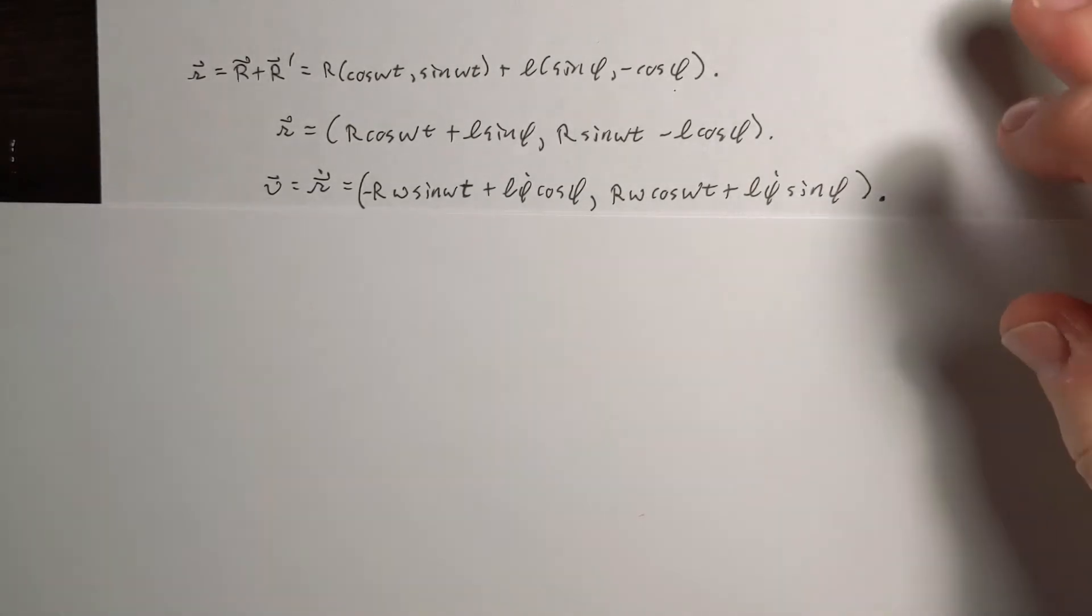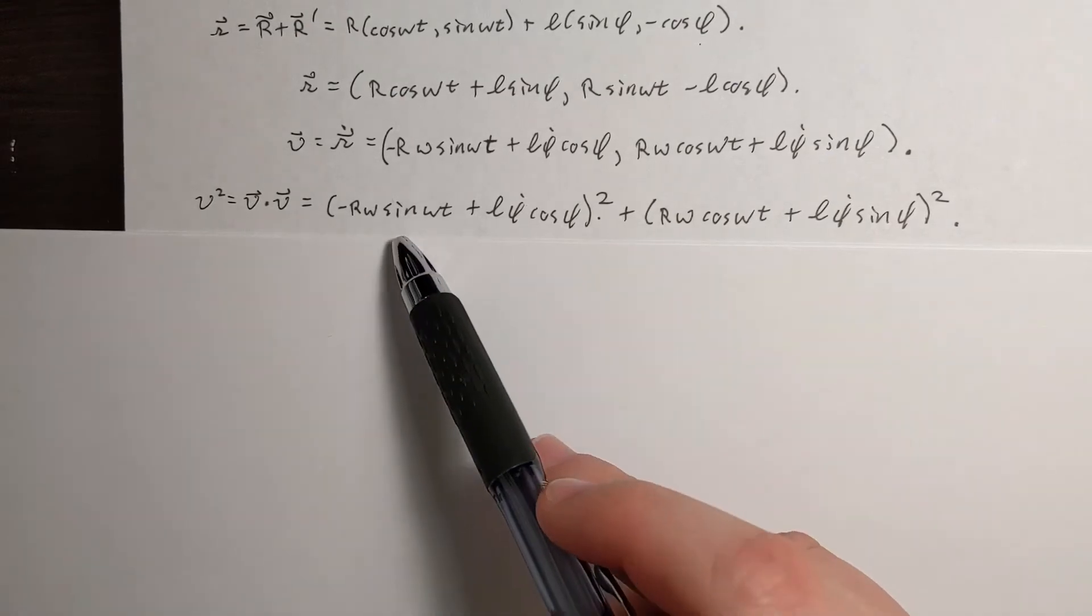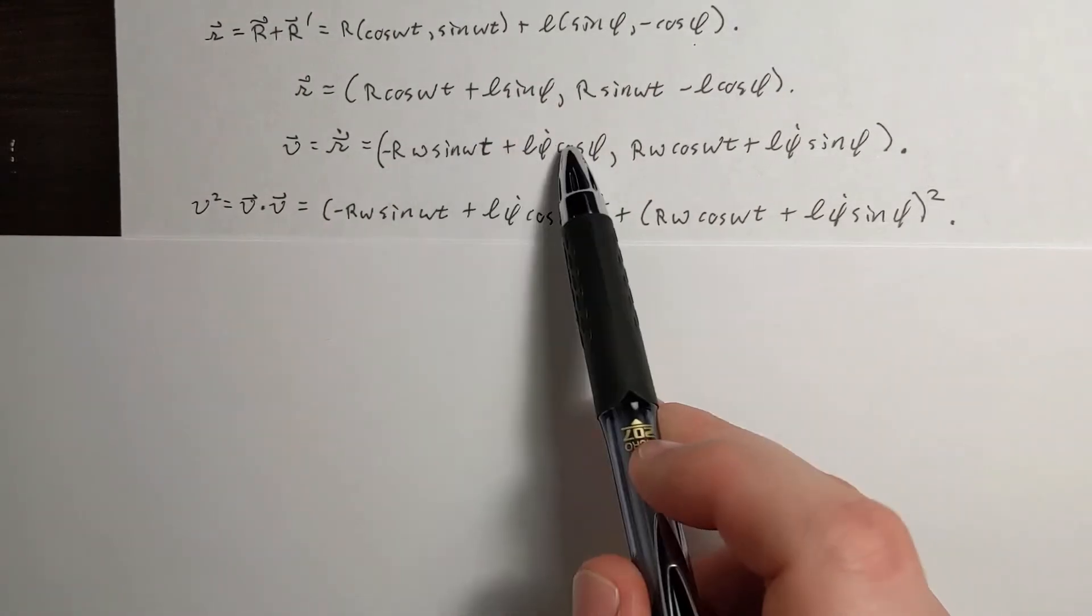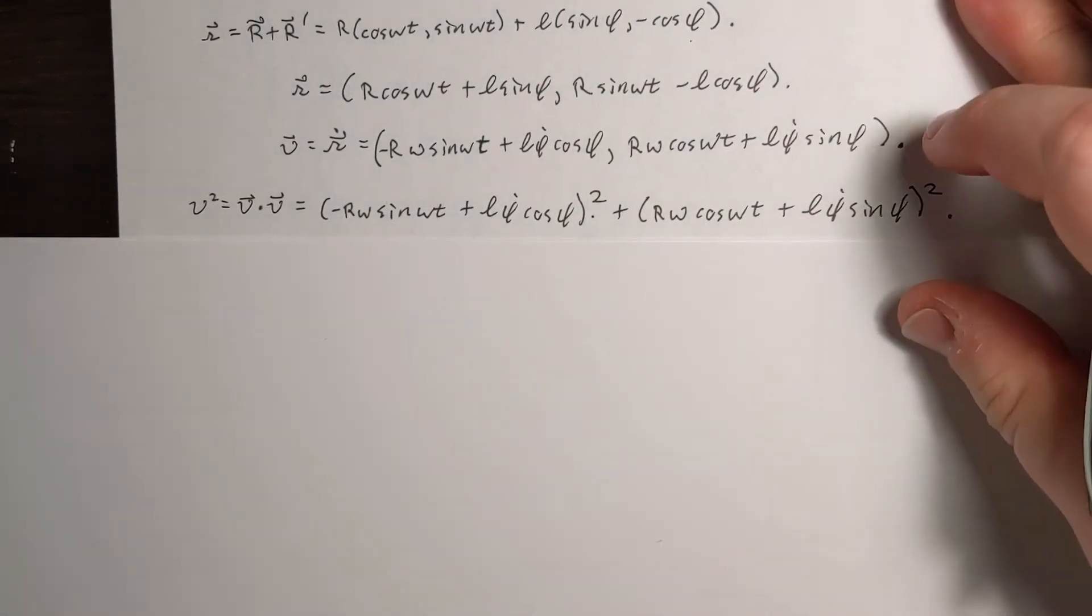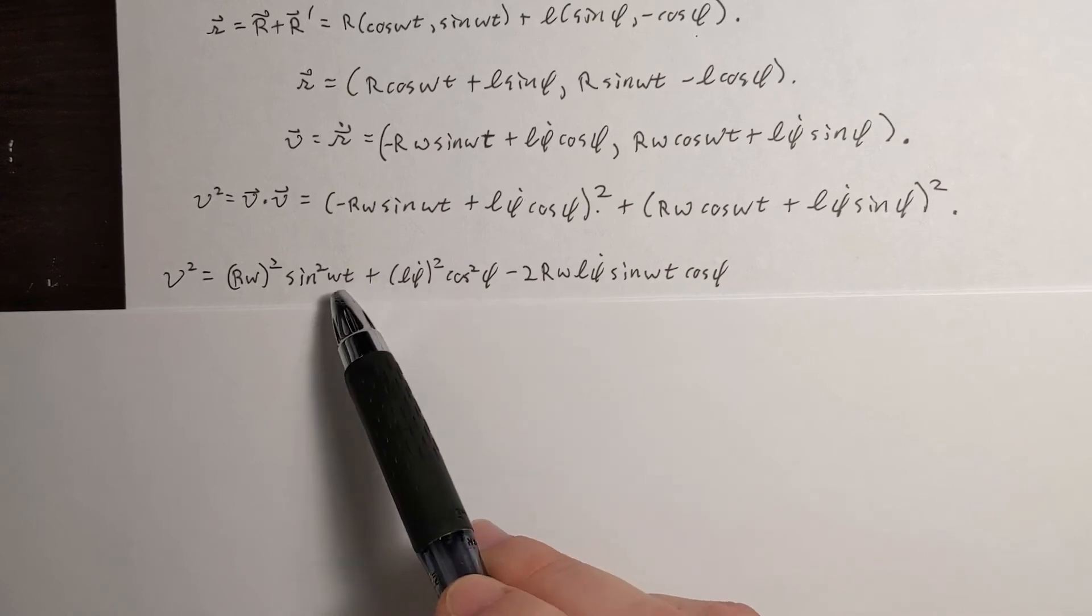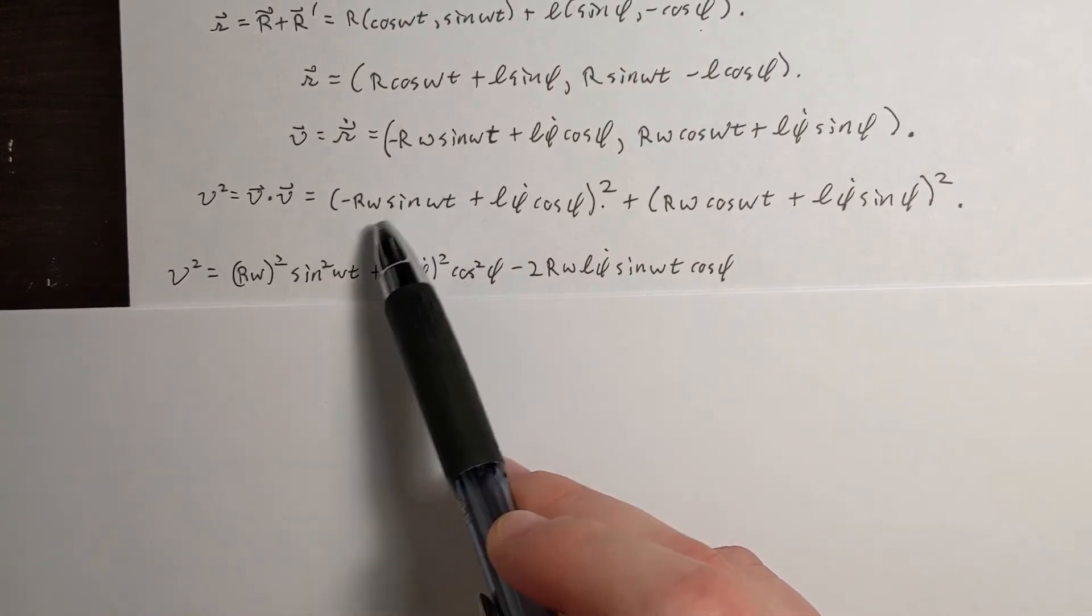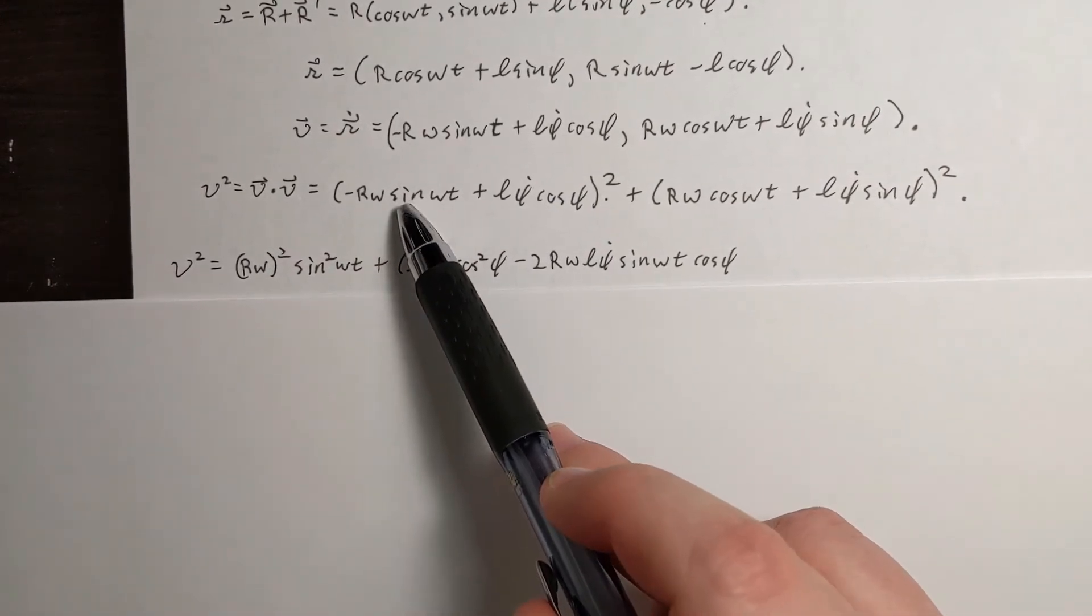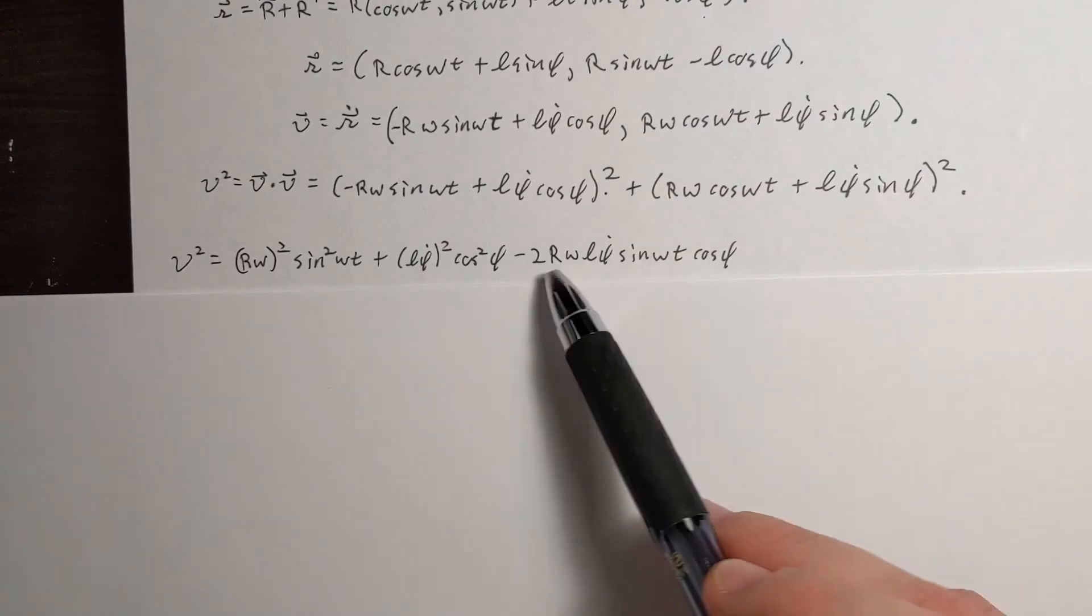So we need V squared, which is just going to be V dotted with V, which is just going to be the magnitude squared of my vector V. So I just square each component. And carrying down to the next line, I see that this quantity squared, or rather this quantity squared, is just this. So foiling, we're going to square this term, that's where this one comes from. I'm going to square this term, that's where this comes from. And then we're going to multiply this times this, and then add to it this times this.